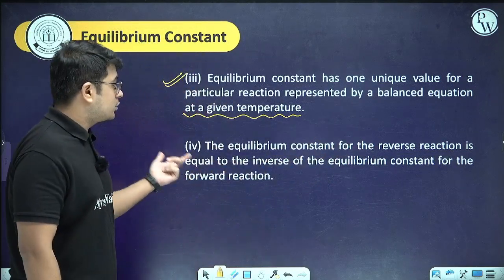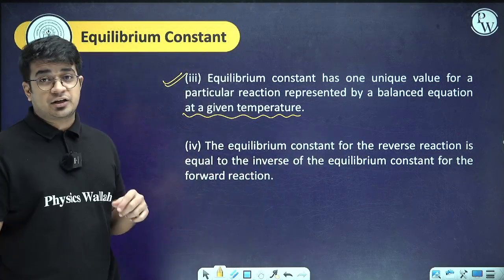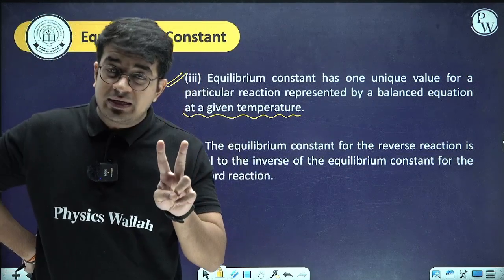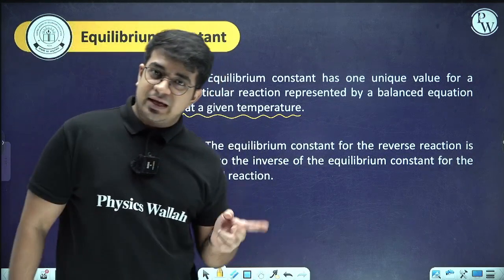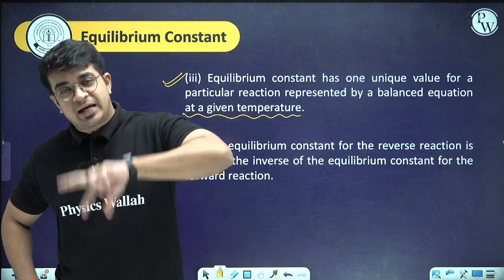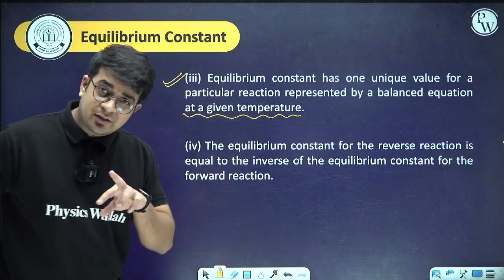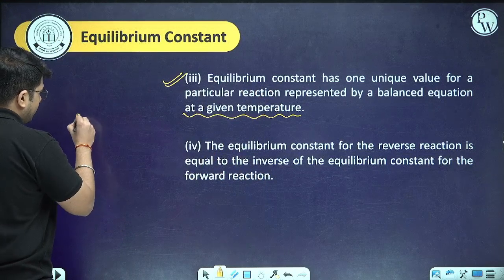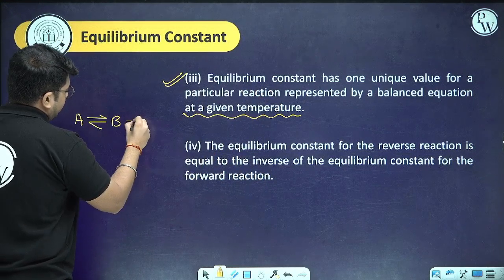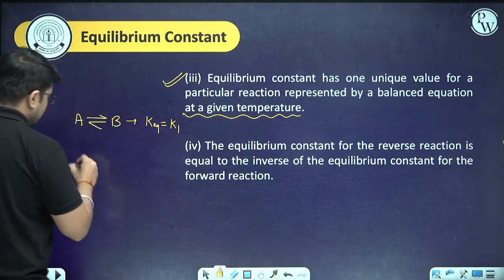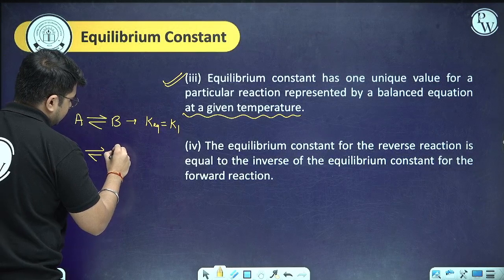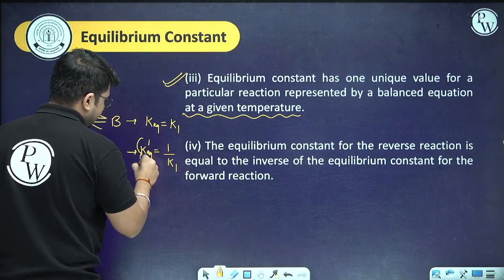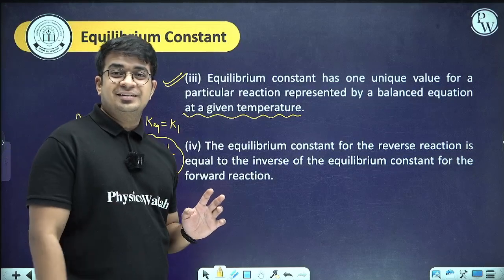The equilibrium constant for the reverse reaction equals the inverse of the equilibrium constant for the forward reaction — similar to how enthalpy sign changes when a reaction is reversed. If A ⇌ B has K₁, then B ⇌ A has K = 1/K₁.